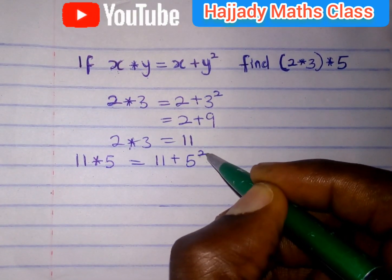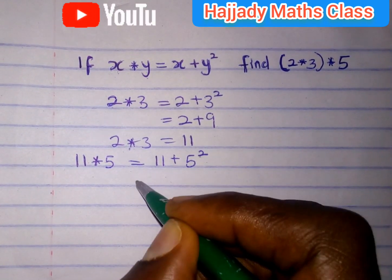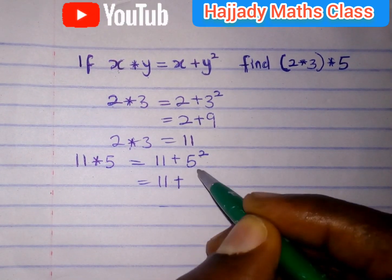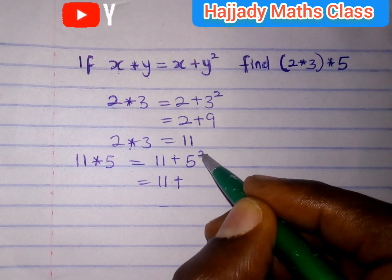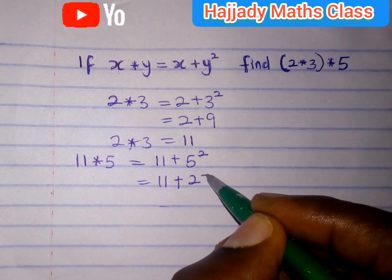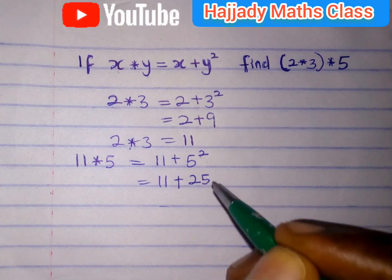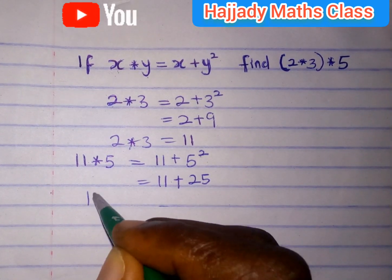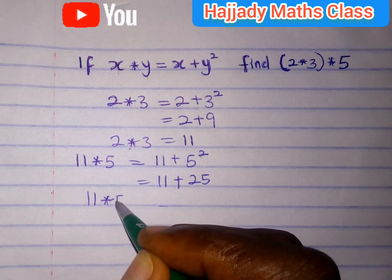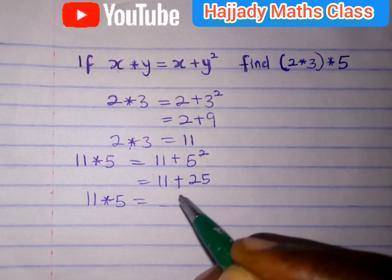So, we have 11 plus 5 raised to power 2. 5 raised to power 2 is the same as 25. So, finally, 11★5 gives 36.